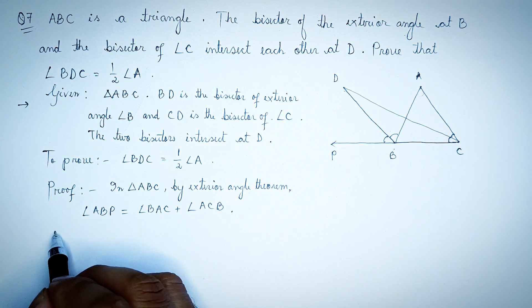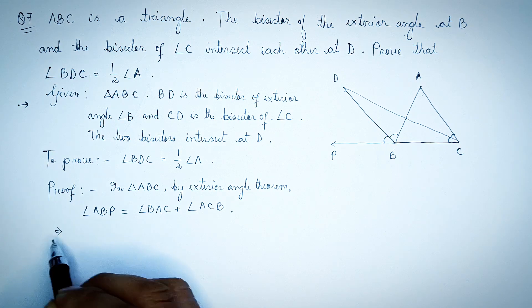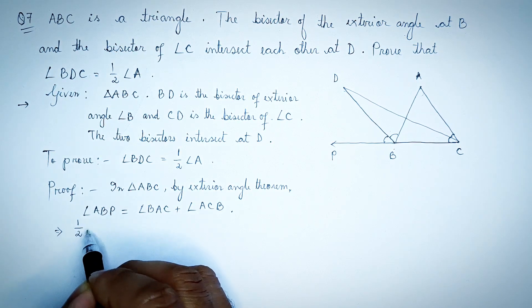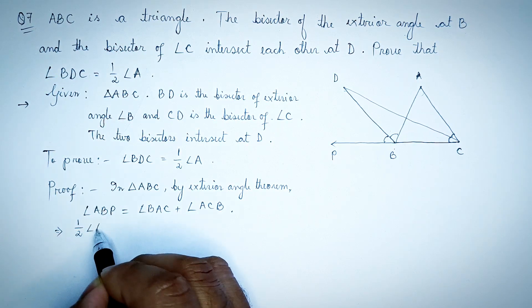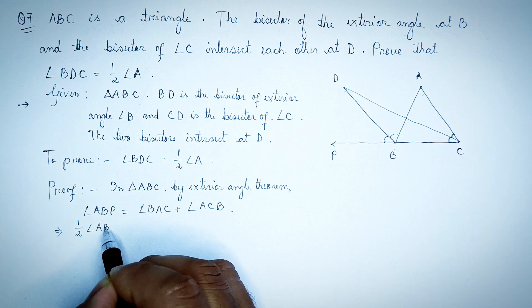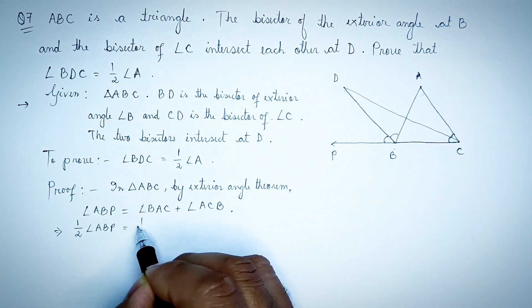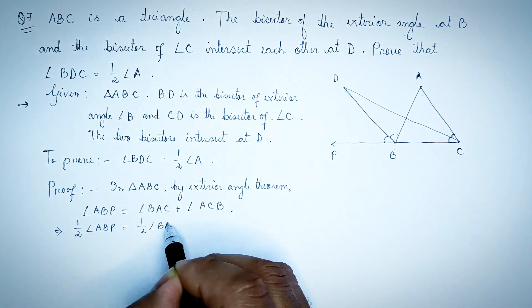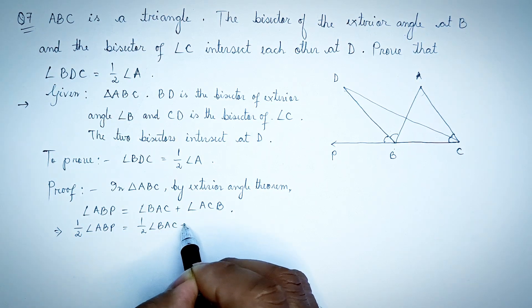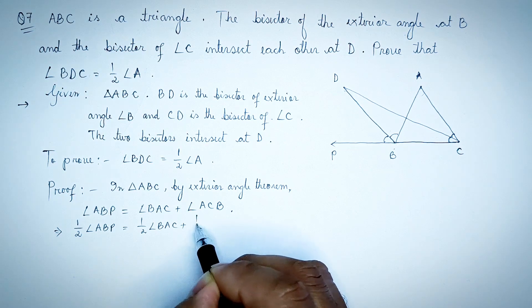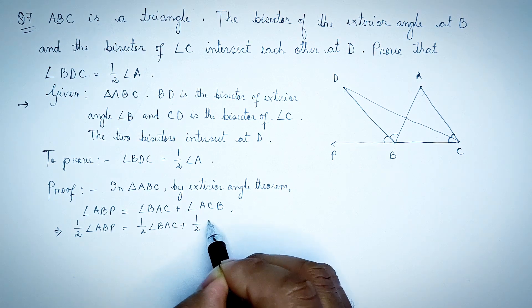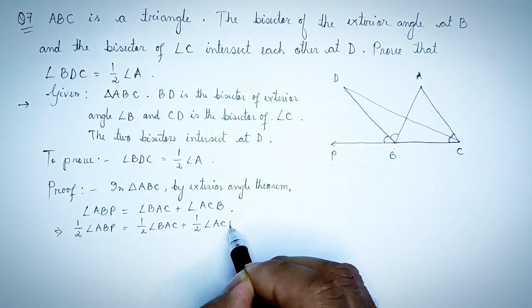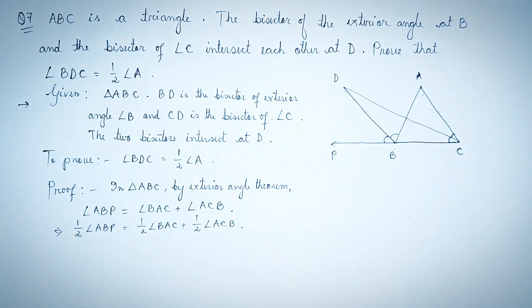Angle ABP is equal to half angle BAC plus half angle ACB.